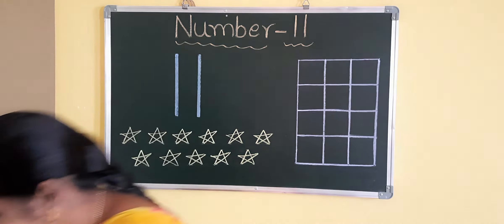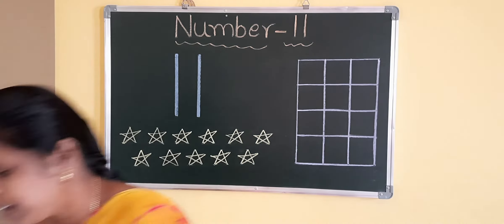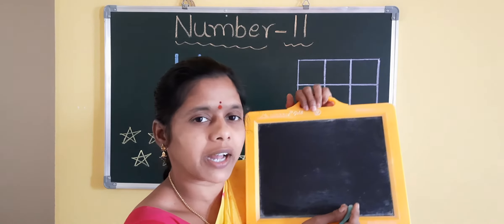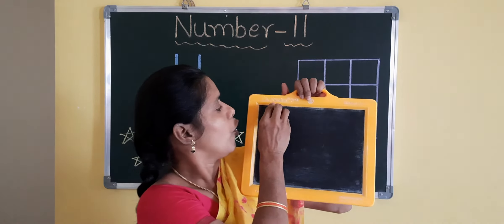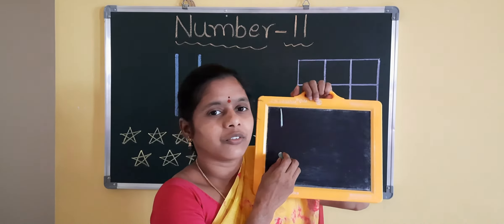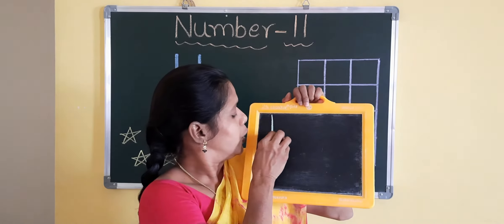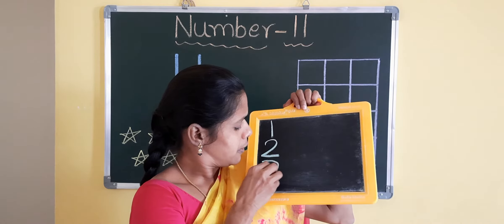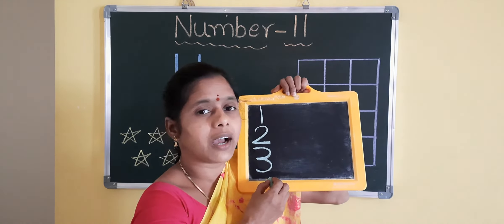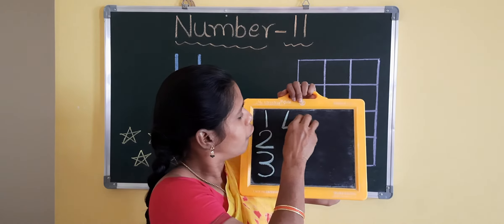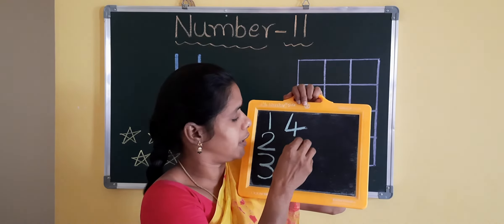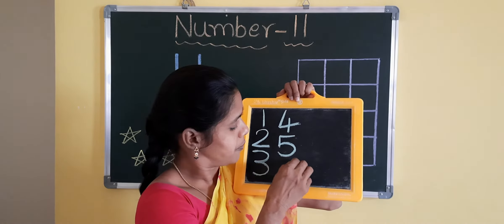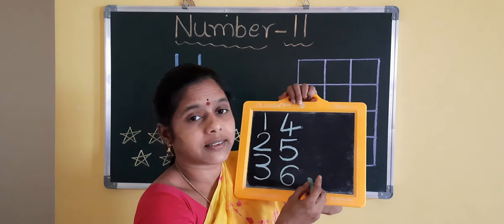Now practice on the slate. Children, take your slate and slate pencil. Write from 1. 1, 2, 3, 4, 5, 6.